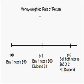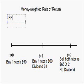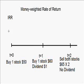Money-weighted rate of return is just like finding the internal rate of return of the account — the IRR. In this method, you treat the cash flows as forces exerted on a balance, and what you have to do is find an internal rate of return such that this balance is balanced.